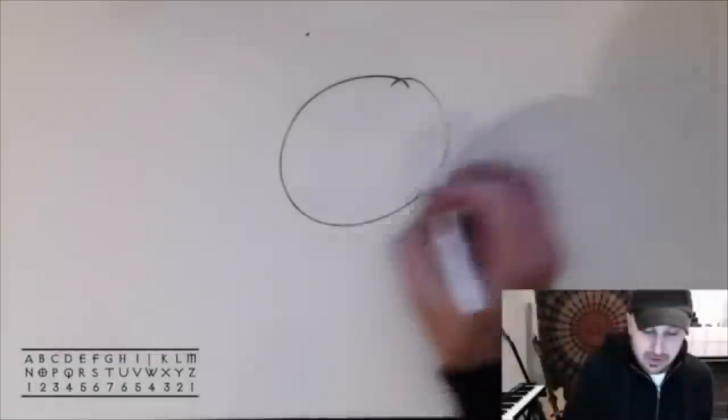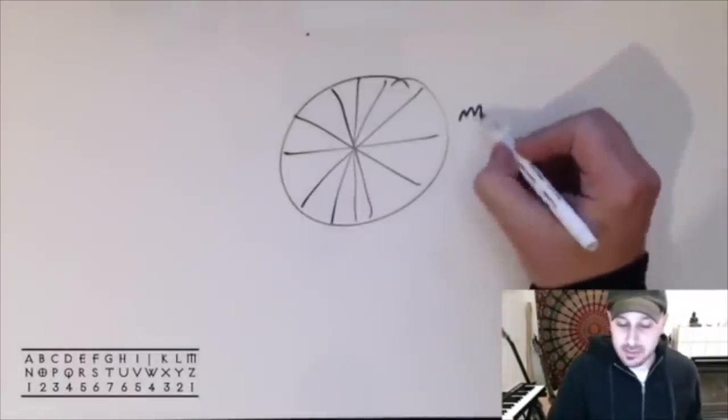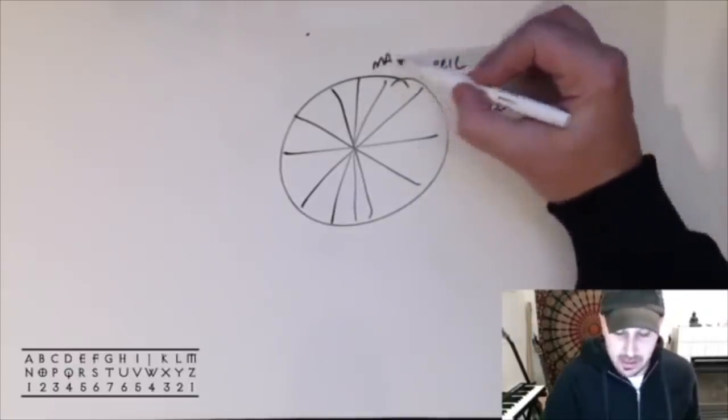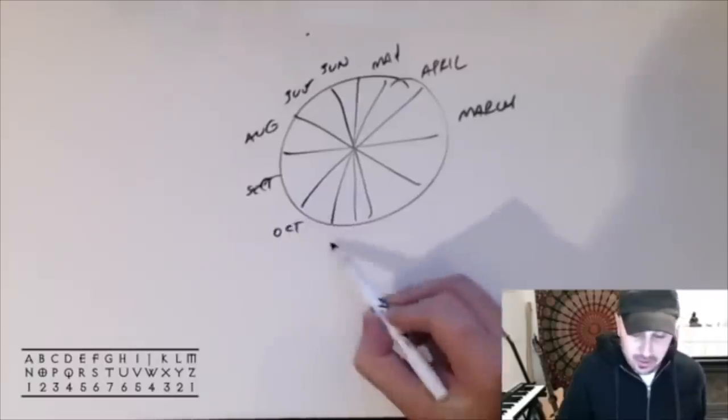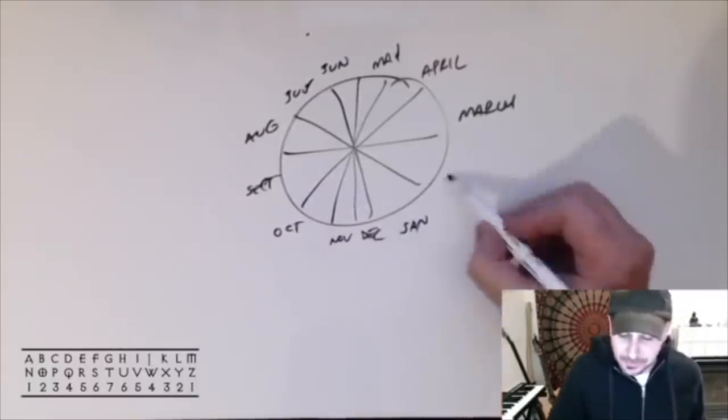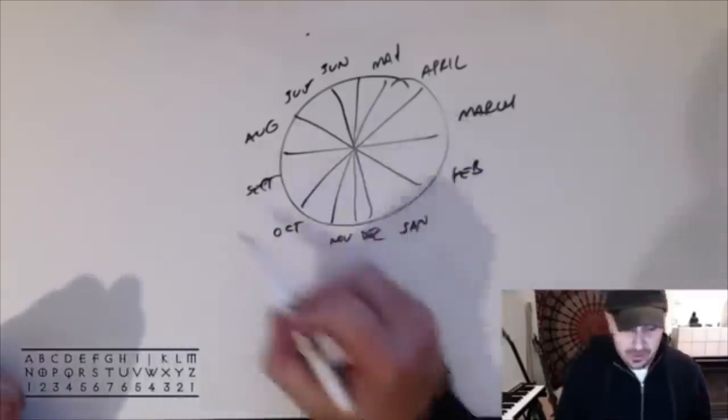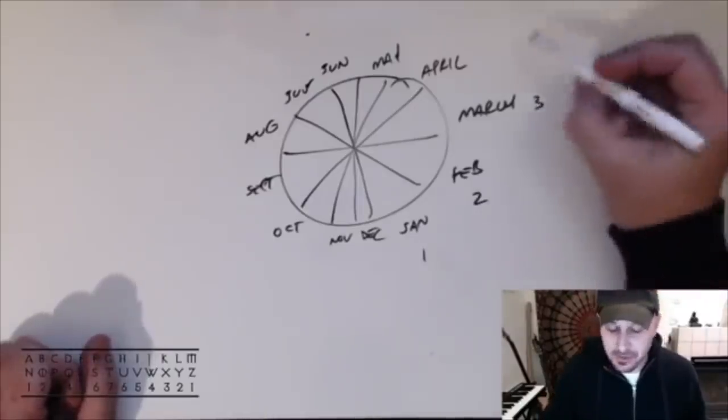Here's our year drawn two-dimensionally. So this would be March, April, May, June, July, August, September, October, November, December, January and February. So there's our year. Now you'll notice the months here like January is the first month, February is the second month, March is the third month, April the fourth, etc.